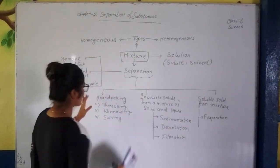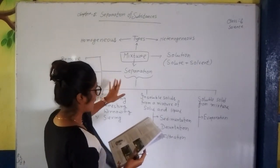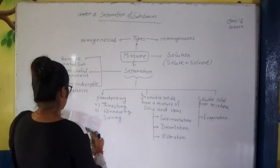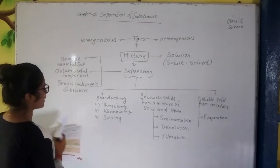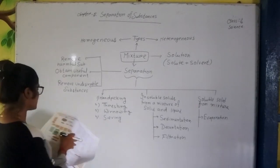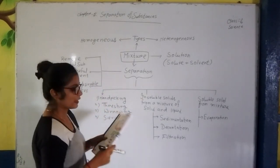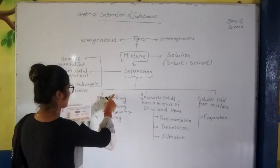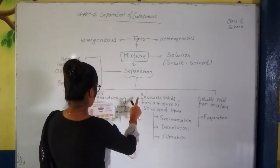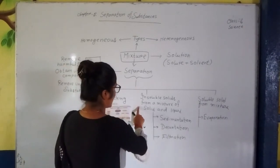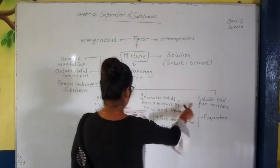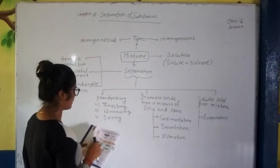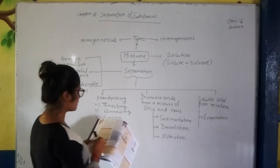Separation of solid substance from a mixture. We need to know about the processes. Mainly there are 4 processes for separation of solids from a mixture: hand-picking, threshing, winnowing, and sieving.